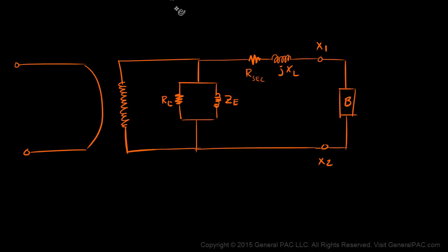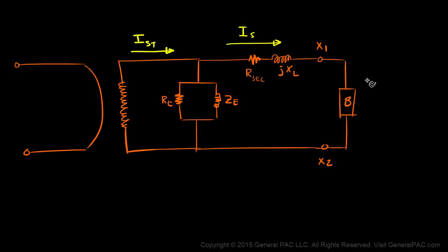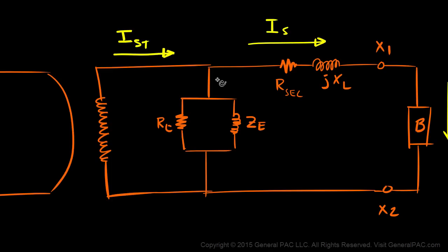Now let's annotate our currents. This current we're going to call IST, which is the same current flowing through our burden. Zooming in, we call this current IE, this current I-loss, and this current IM.